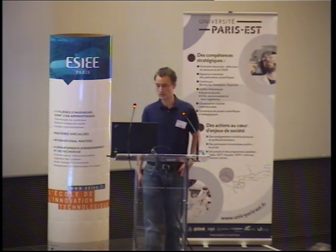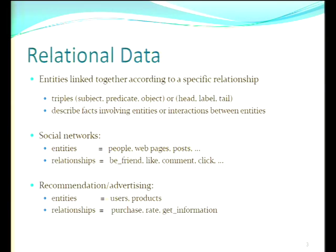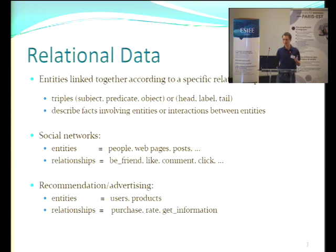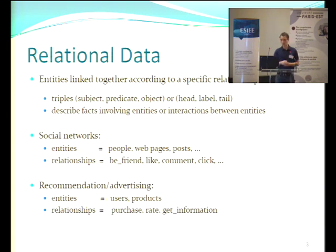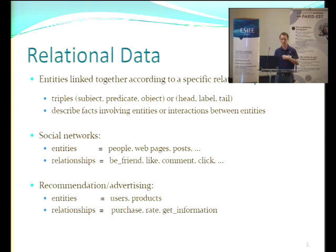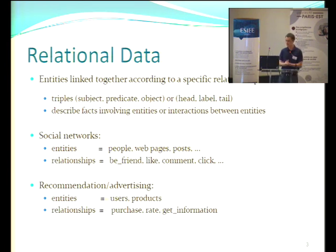Today with the web we have a lot of relational data — entities that are linked together according to a specific relationship. For instance in social networks we have entities which can be people, web pages, posts, and all of these entities can be linked together: people can be friends, people can comment on a post of someone else, or people can like a web page. In recommendation or advertising we also have linked data between users and products. A user can purchase a product, visit the web page of a product, or simply rate a product.